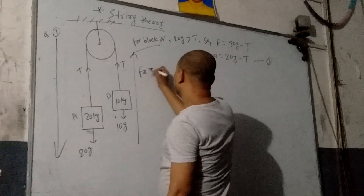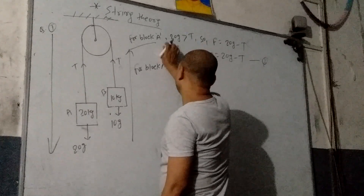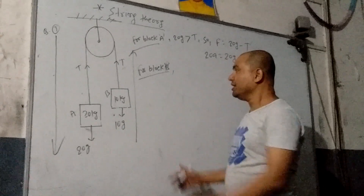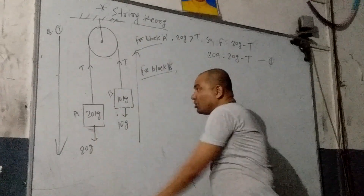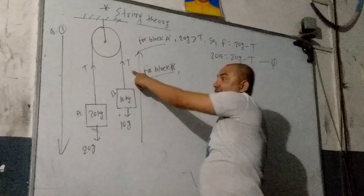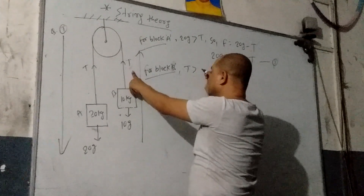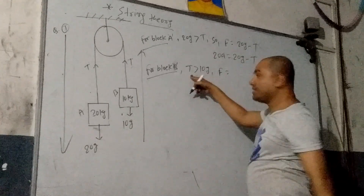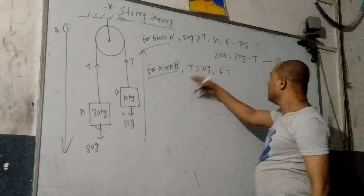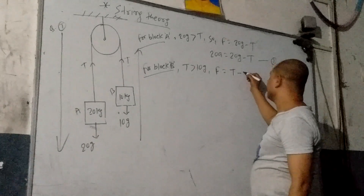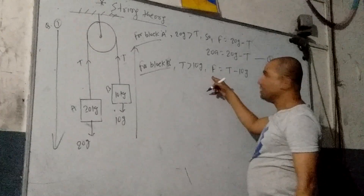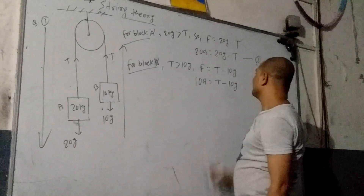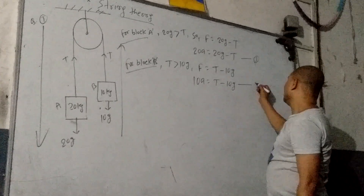Now for block B — it is the lighter body, so it will move upward. For block B moving upward, tension is greater than 10g. The net force equals T minus 10g. Applying F = MA with mass 10, we get: 10A = T − 10g. This is equation two.